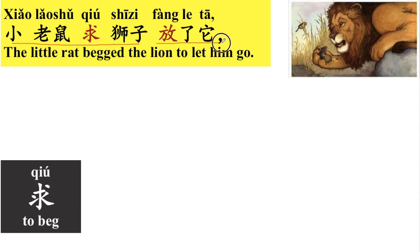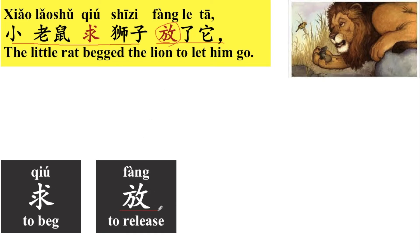小老鼠求狮子放了它。放 here means to release. 放 has several meanings — it can mean to put, as in 我把书放在桌子上 — I put the book on the table. Here, 放了它 means released it.